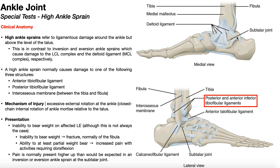The talus articulates with the calcaneus below it at the subtalar joint. High ankle sprains cause ligamentous damage above the level of the talus, specifically damaging one of three structures. In this lateral view of the ankle, we can see the anterior and posterior tibiofibular ligaments — make sure to differentiate these from the talofibular ligaments, which connect the talus and the fibula, whereas the tibiofibular ligaments connect the tibia and the fibula. These ligaments help prevent excessive separation of the tibia from the fibula.